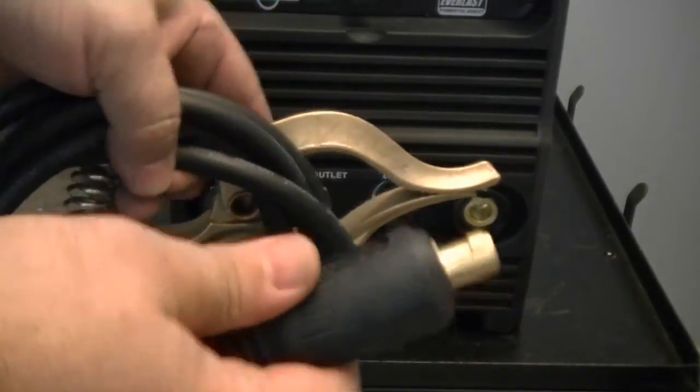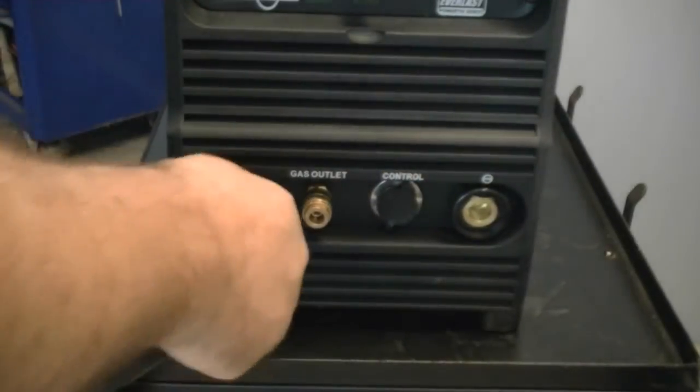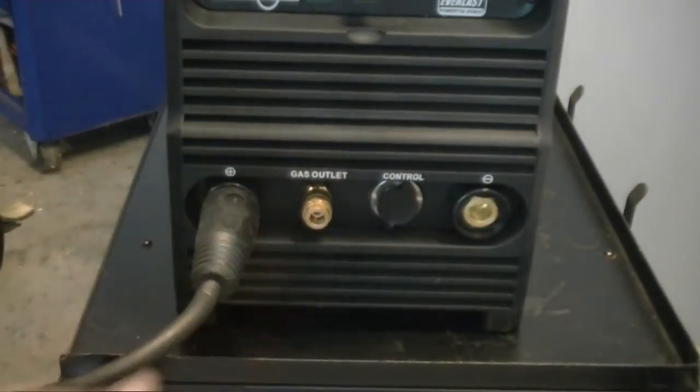To ready the unit for TIG welding, make sure the heavy duty work clamp is installed on the positive side of the unit. On this unit the positive side is located on the left.